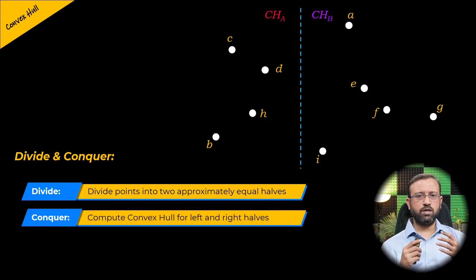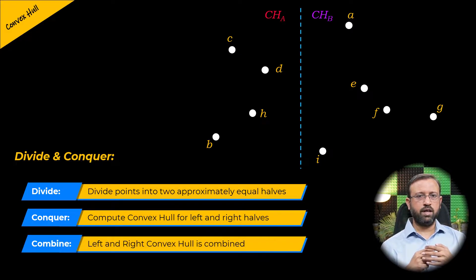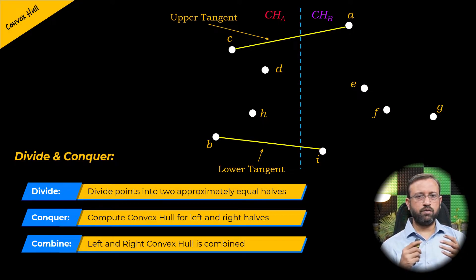The second phase is the conquer. In the conquer phase, we recursively compute the convex hull for the points in the left half and we recursively compute the convex hull for the points in the right half. The third phase is combine. In the combine phase, the left convex hull and the right convex hull are combined by finding the line of tangent connecting the points in the left half and the points in the right half to get the convex hull for the entire set of points.